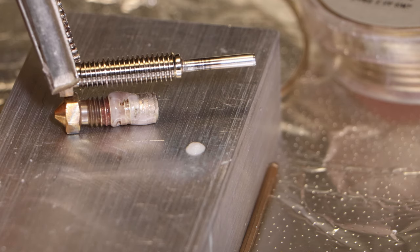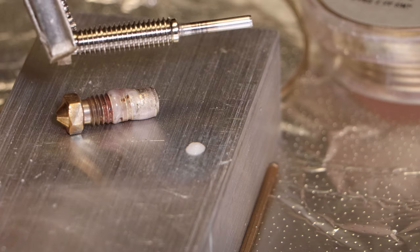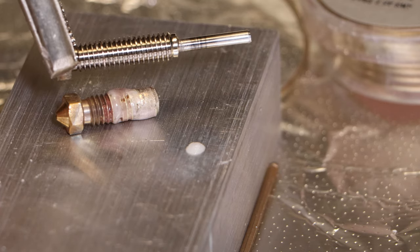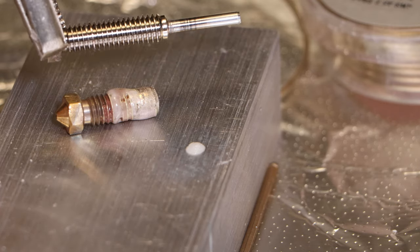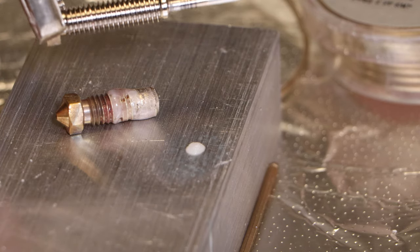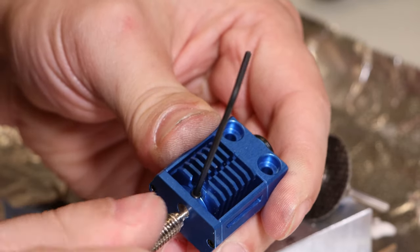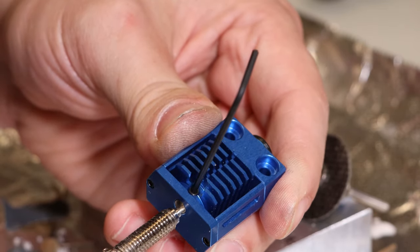You can see here this is a little bit longer than the Volcano nozzle, but the Volcano nozzle also heats up part of the heat break, so it's actually probably about the same length. So you can expect the same type of heating performance out of this as you can out of a Volcano nozzle. Now I'll put this back together and it looks like it bottoms out, so this is working just great.